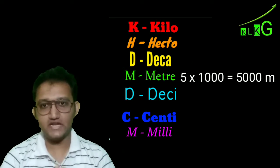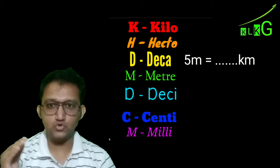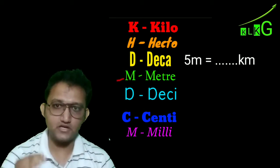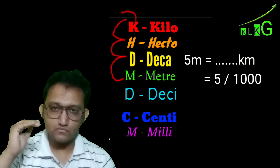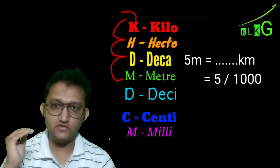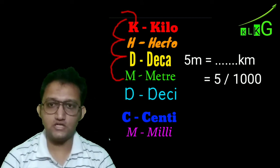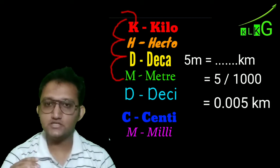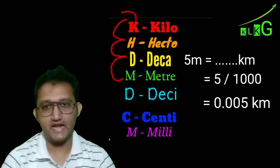If somebody asks you to convert 5 meters into kilometers, you have to go those steps up. That means we have to divide. So 5 divided by 1000, which you can also write as 0.005 in decimal.